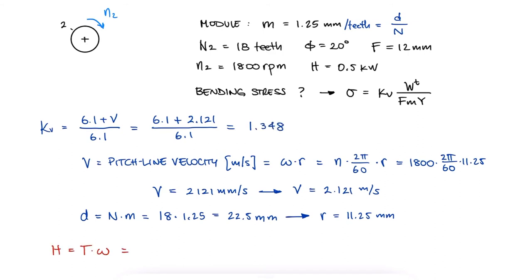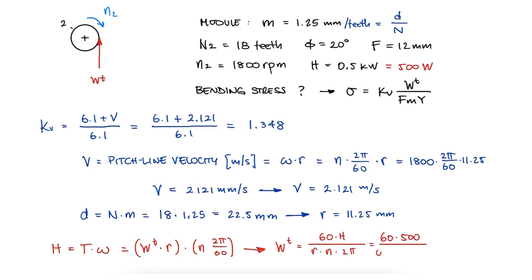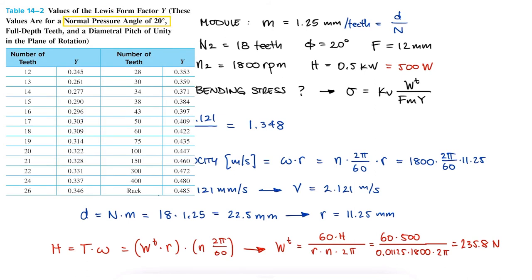With the same process we've used for several examples in the past, we can find the tangential component of the force at the teeth. Finally, the value for the Lewis form factor capital Y for a normal pressure angle of 20 degrees and full depth teeth is 0.309 for 18 teeth.